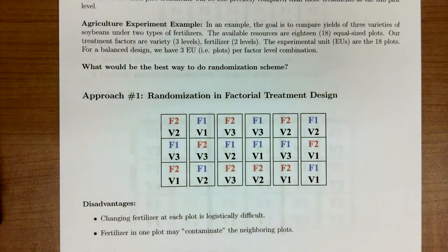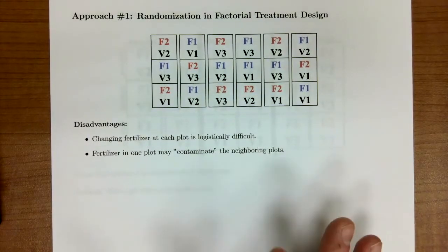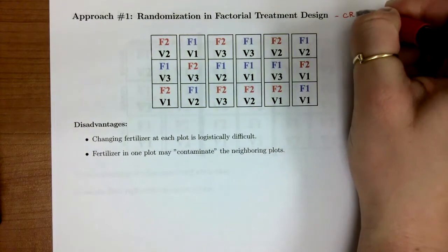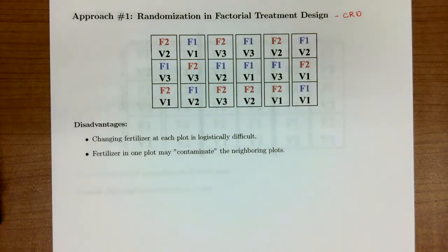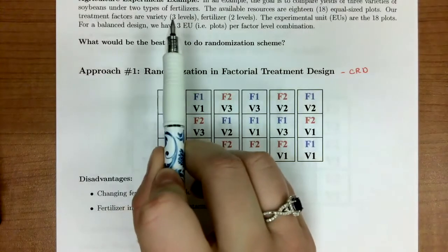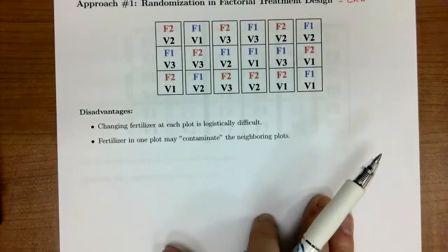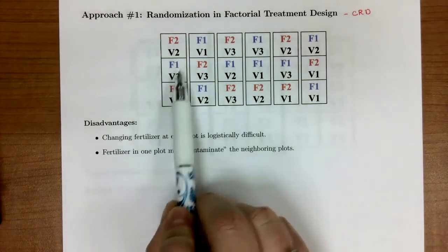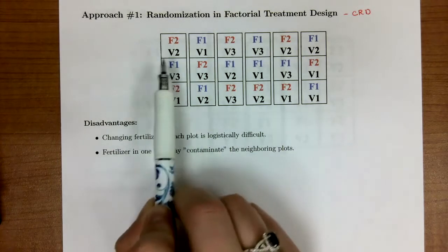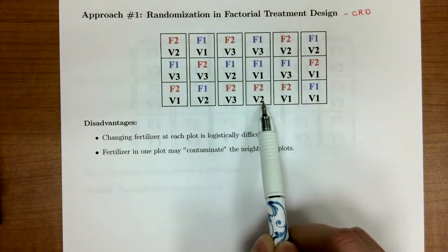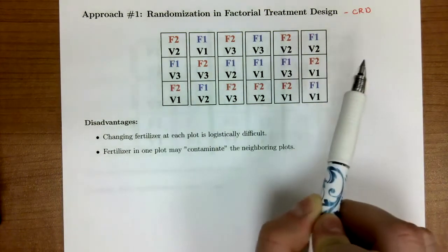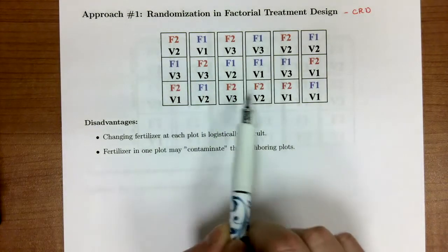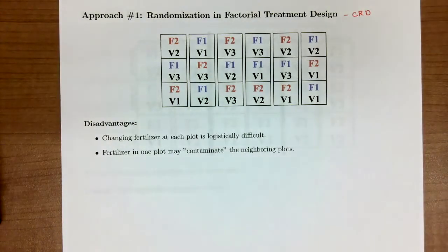The first approach we might take is something we've talked about before, which is a factorial treatment design under a CRD. In this case, we would take our six combinations. Why do we have six? Because we have three levels of soybean variety and two of fertilizer. We would randomly apply those to all of our 18 fields. Notice that we have F2V2 here, F2V2 here, and F2V2 here. Each treatment combination will appear three times. This is a great design, but what if our farmer came back and told us that it's hard to change fertilizers at each plot?